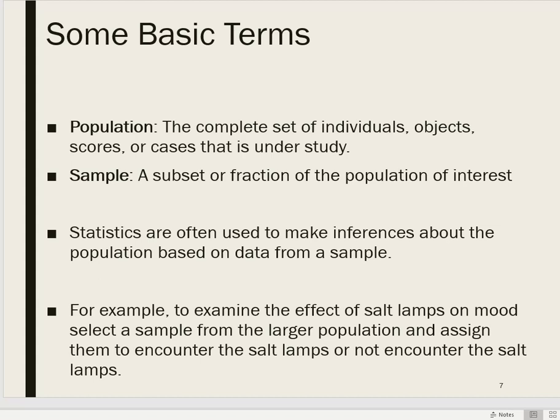We're probably not going to get every college student in the United States, or even every student on our campus. Let's say we get 120 college students. We randomly assign 60 of them to encounter the salt lamp, and another 60 to not encounter it, holding all other things equal. We then assess their mood and attempt to determine if there is a large enough difference between the two groups to conclude that salt lamps have an effect on mood — or decide there's not enough evidence to conclude that they do.